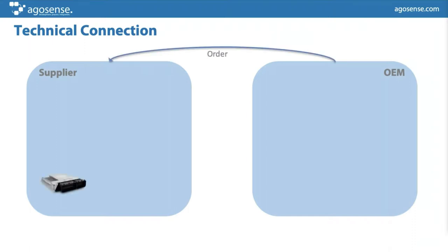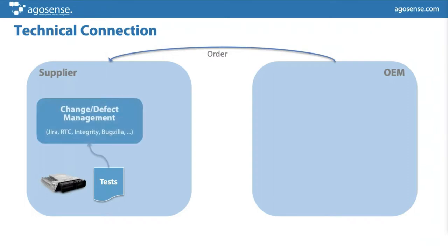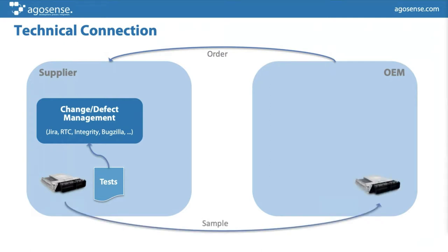From a technical perspective: on the left is the supplier, on the right is the OEM. The OEM places an order to the supplier for certain car projects, then the supplier starts developing and testing, managing their own defect management. When the system reaches a certain degree of development, they hand it over to the OEM so the OEM can perform integration testing or functional testing.